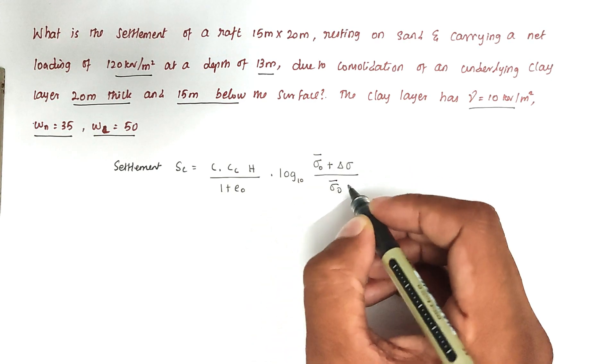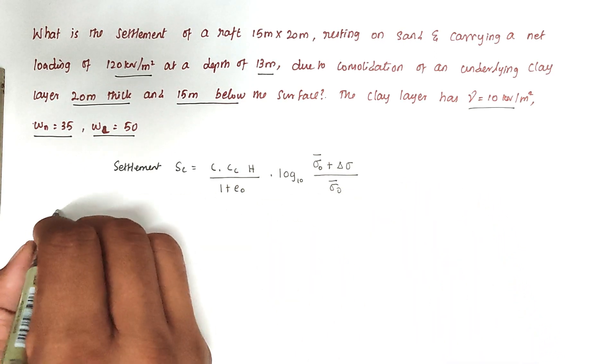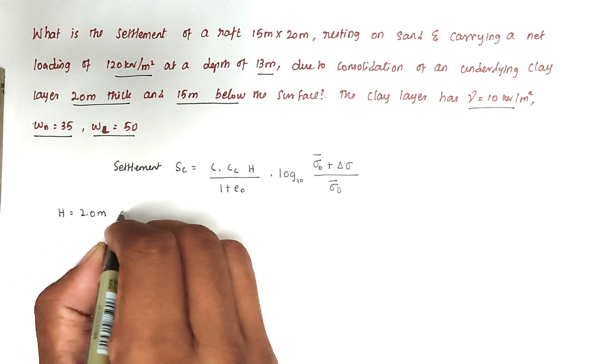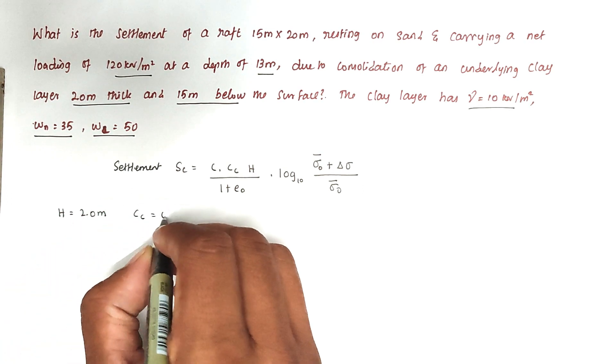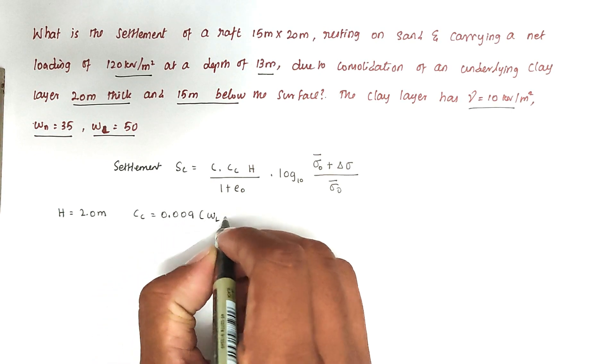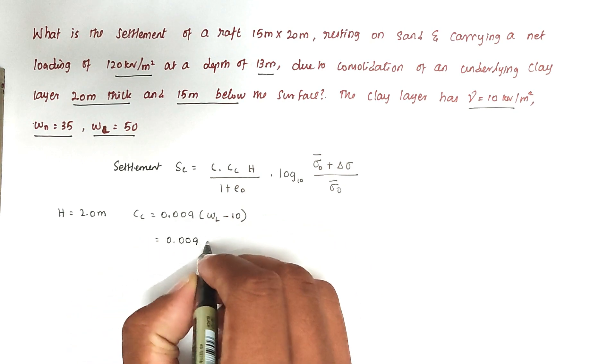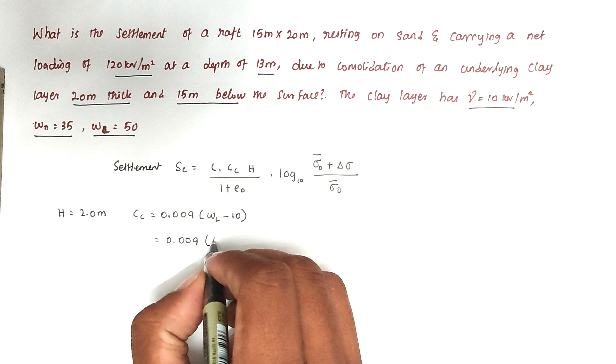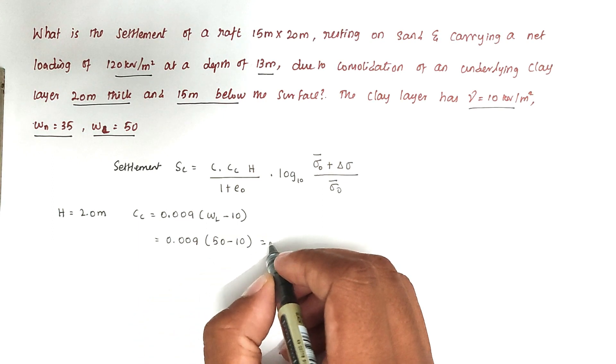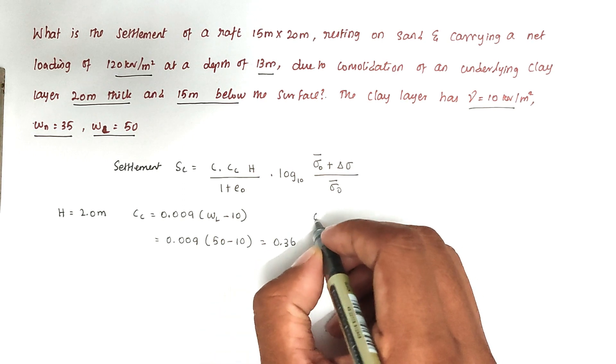Now the H value is 2.0 meters. Then CC, we know the formula: 0.009 times W L minus 10. So the CC value will be 0.36.